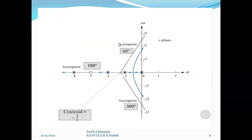These angles are shown on the s-plane. The real axis is sigma, and the imaginary axis is jω. The centroid is located at minus 1.3 (between −1 and −2). The asymptotes start from this centroid: the first asymptote is at 60°, the second at 180°, and the third at 300°. All three asymptotes are marked on the s-plane.